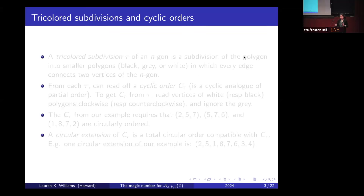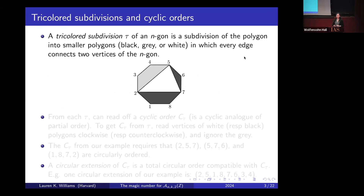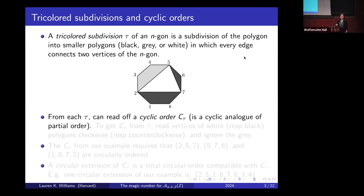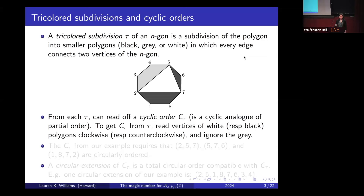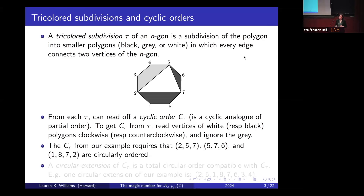I'll start completely combinatorially. A tricolored subdivision tau of an n-gon is a subdivision of the polygon into smaller polygons colored black, gray, or white, in which every edge connects two vertices of the n-gon. Here's an example of a tricolored subdivision of an octagon. From every tricolored subdivision tau we can read off a cyclic order — a cyclic analog of a partial order. To get this cyclic order, we read the vertices of white polygons clockwise, black polygons counterclockwise, and ignore the gray.